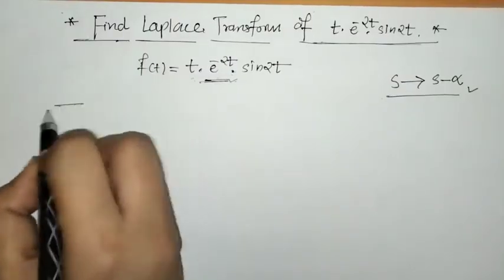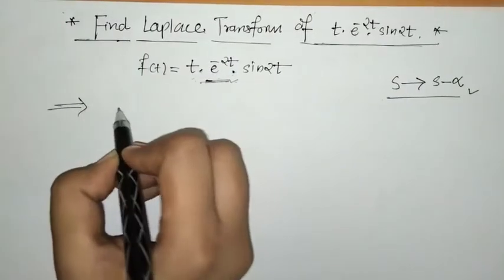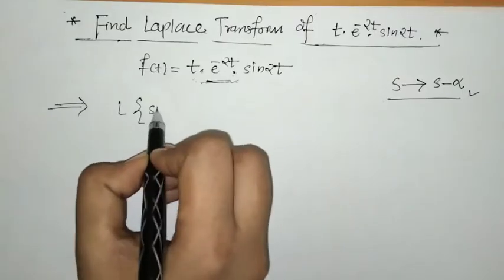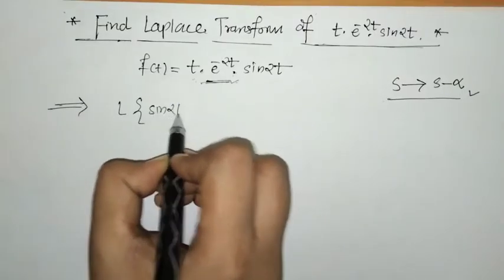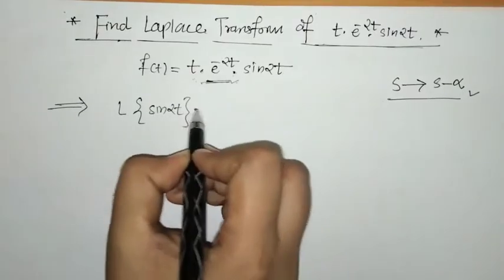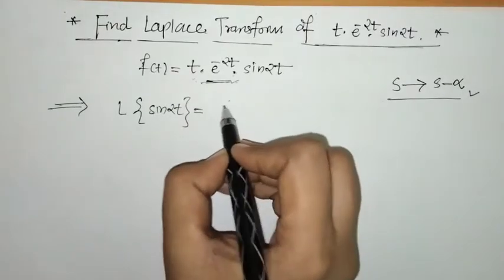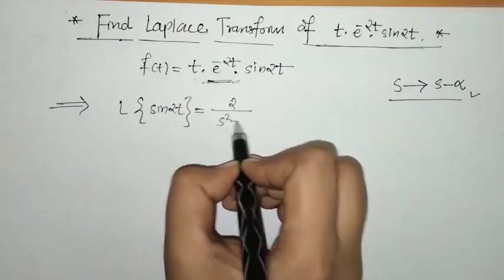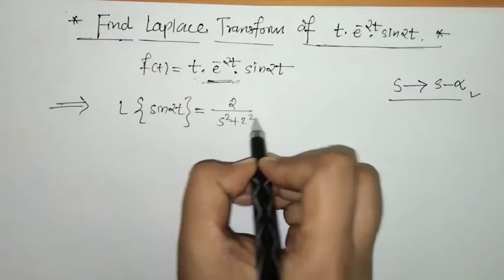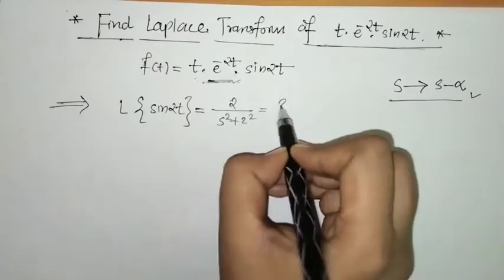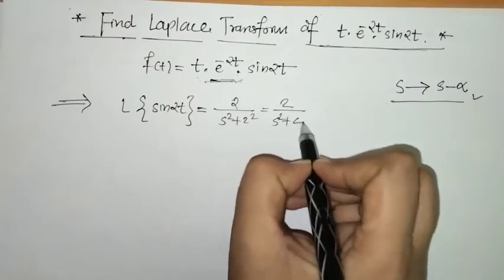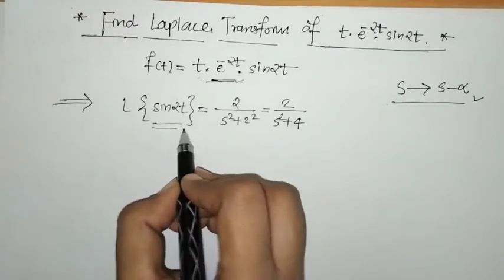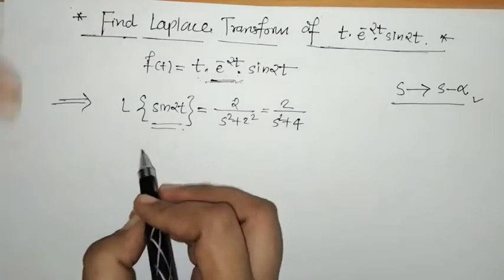So first we have to find the Laplace of sin(2t). What is it? This is 2 upon s² + 2², which equals 2/(s² + 4). So this is the Laplace of sin(2t).